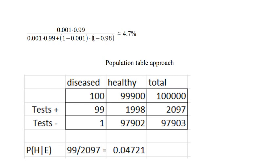What we're interested in is the probability that the hypothesis is true — that we have the disease — given that the evidence says we have the disease, i.e., the test came back positive. Given E, we're only looking at the 2,097 people who got a positive result. Of those, only 99 are actually diseased. Only 99 of the 2,097 people who received a positive test actually have the disease — and again, that's 4.7%.